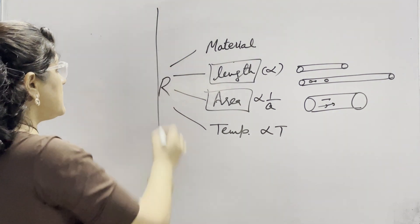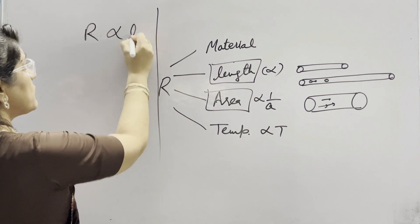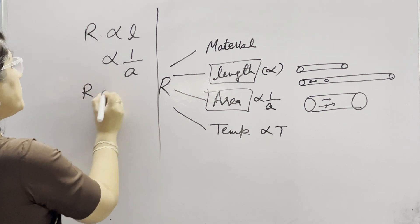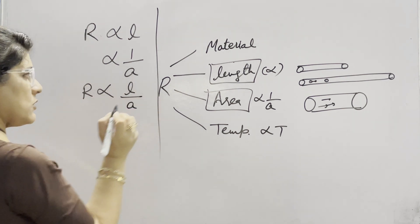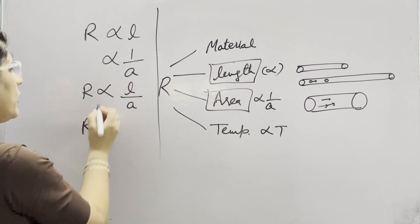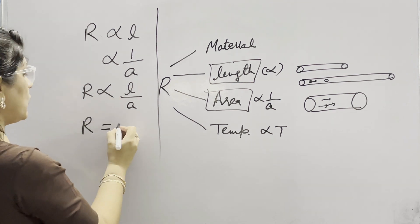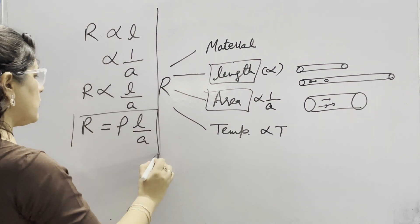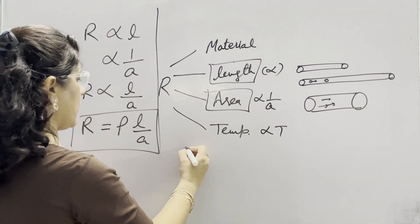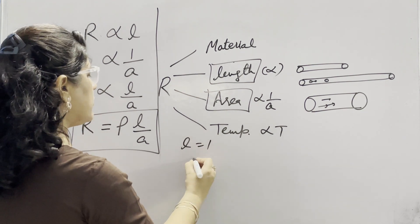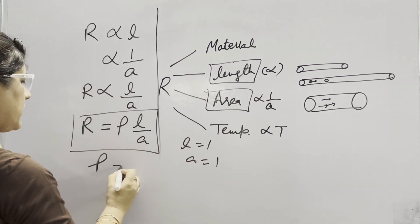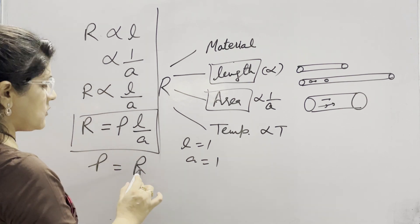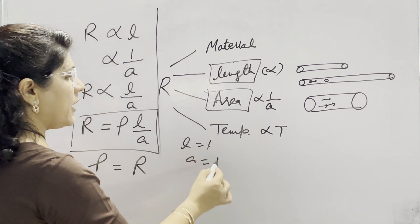Resistance is directly proportional to the length L and inversely proportional to the area of cross section A of the conductor. Removing the sign of proportionality introduces a constant called resistivity or specific resistance, rho. So R = ρL / A. If we take a conductor of unit length and unit area of cross section, then resistivity equals the resistance of that conductor. This is the definition of resistivity.